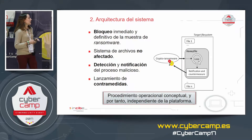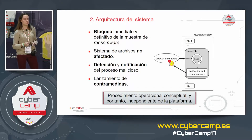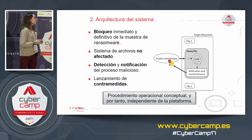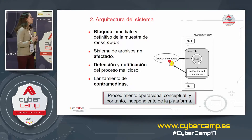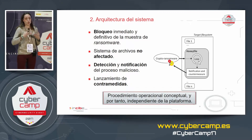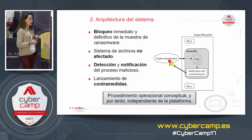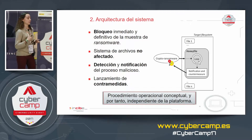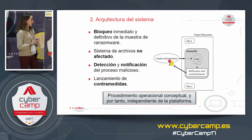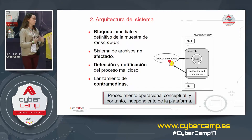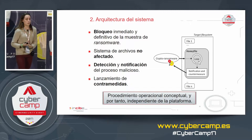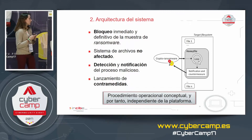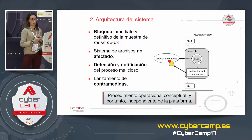Here you can see the system architecture. Our honey file traps are distributed across the entire file system, strategically placed so that ransomware accesses those traps before reaching real files. These traps are infinite files or loops, meaning a loop is created that gives us time to detect the ransomware, block it, report the intrusion, and implement the necessary countermeasures.